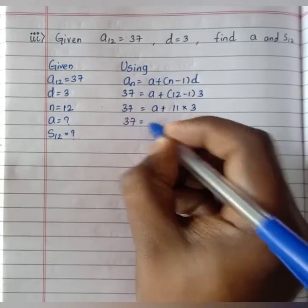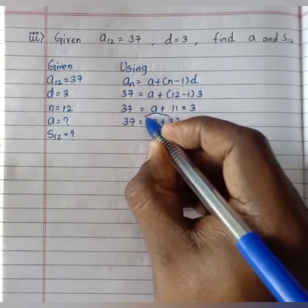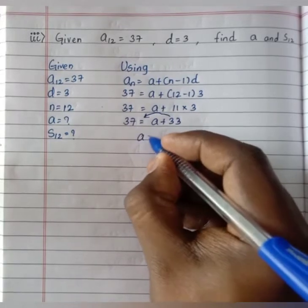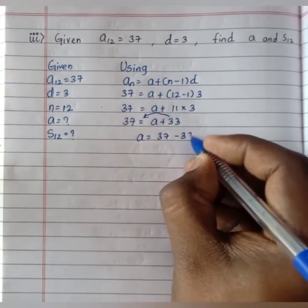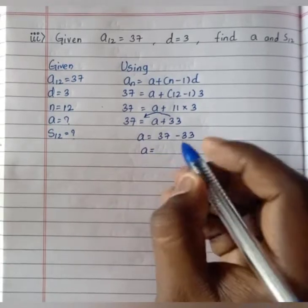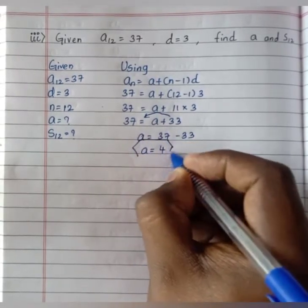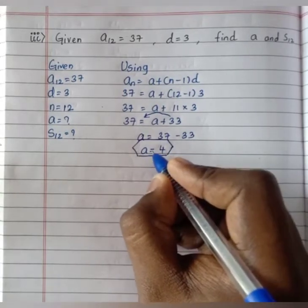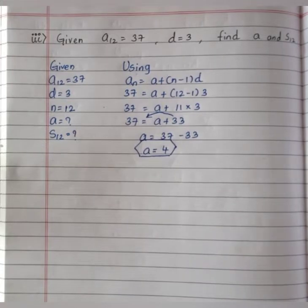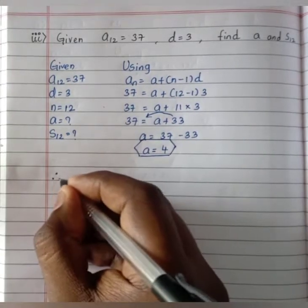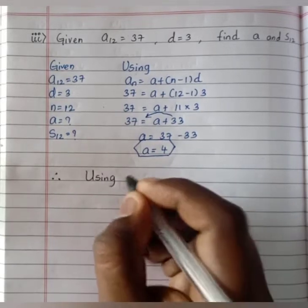So 37 equals a plus 11 times 3 which is 33. Shifting plus 33 to the LHS it becomes minus 33, therefore a equals 37 minus 33 which equals 4. We get the first term as 4.